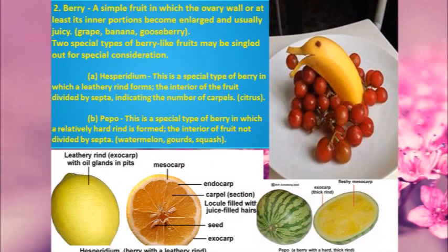The second type of fleshy fruit is the berry. Berry is a simple fruit in which the ovary wall, or at least its inner portion, becomes enlarged and usually juicy. It is seen in grape, banana, and gooseberry. There are two special types of berry-like fruits: hesperidium and pepo.